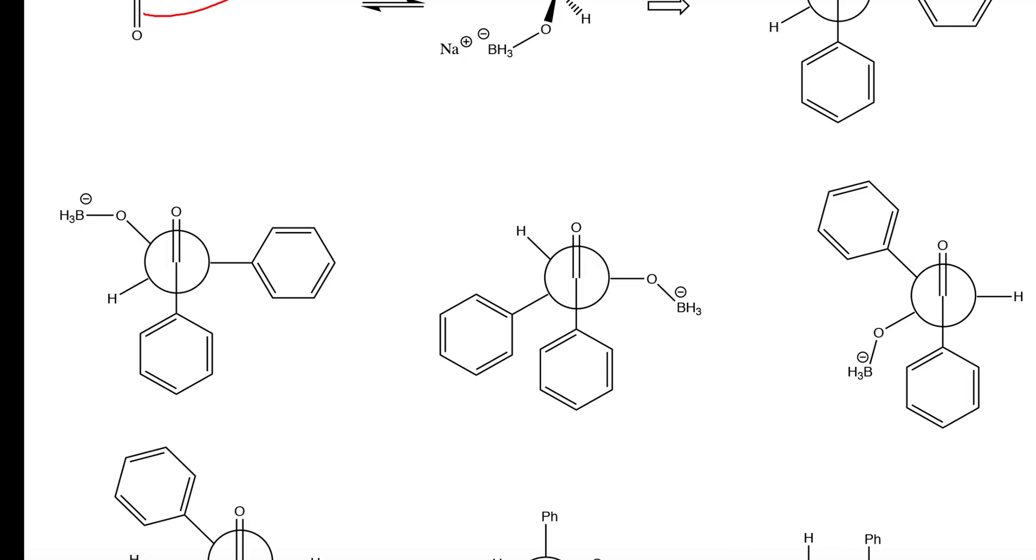There are actually three different conformations that can be formed after the first reduction. So we can get conformation A, conformation B, or conformation C. As you can see right here,